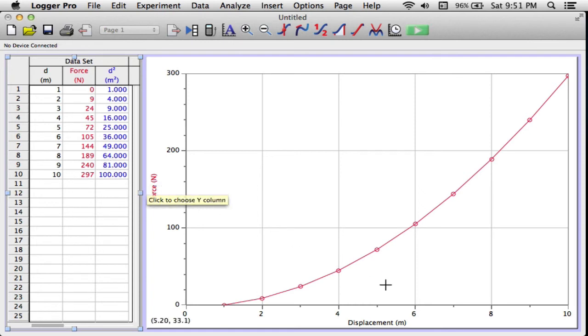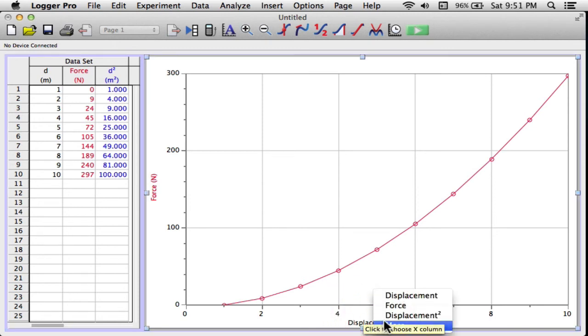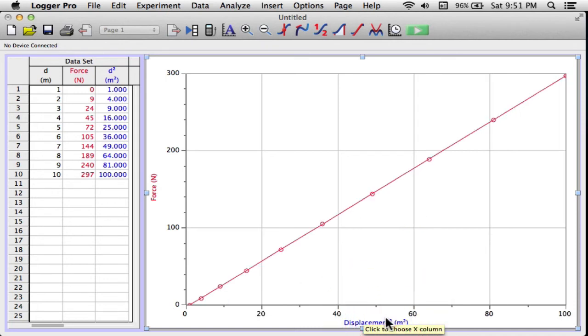So everything's nice and organized, but my graph didn't change. So to change the graph, I'll click down here in the bottom column because I know it's supposed to be an x-squared, so I'm going to play with the x-axis. Displacement, go down and choose displacement squared. That's the calculated column I just made.